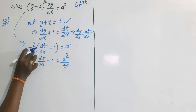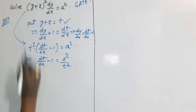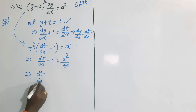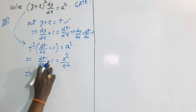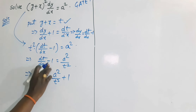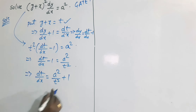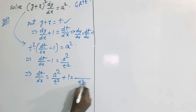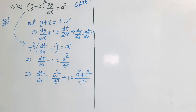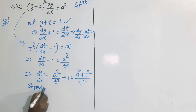From this, dt/dx = a²/t² + 1. Taking LCM, we get dt/dx = (a² + t²)/t².